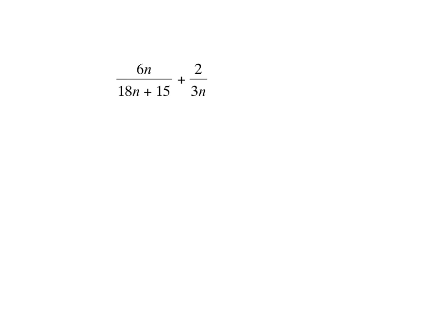Now we're going to look at another example. This one is similar; however, I'm going to start out by pulling out what they have in common, which is a three, and that leaves us with six n plus five. When I look at this to determine what they share in common, I notice that they both have a three, but that's all they have in common. So in order for them to have a common denominator, this one needs an n, and this one needs a six n plus five.